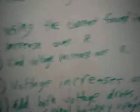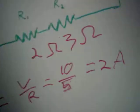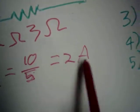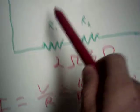Step two. Using the current found in step one, we find voltage increase over resistor 1. So resistor 1, we have 2 ohms, and if the current, or the circuit is at 2 amps, voltage equals current times resistance, so 2 times 2 is 4.